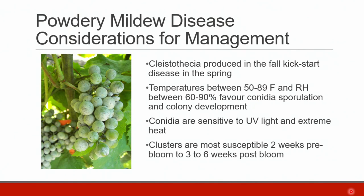The timing of ascospore release and the Goldilocks paradox must be considered when deciding how to best manage powdery mildew. Although powdery mildew does not require free moisture for spore germination, it does require high relative humidity between 60 to 90 percent. Conidia are sensitive to UV light and extreme heat, so canopy management becomes important. However, the fact that clusters are most susceptible from two weeks pre-bloom to up to six weeks post-bloom is really what drives a management program.